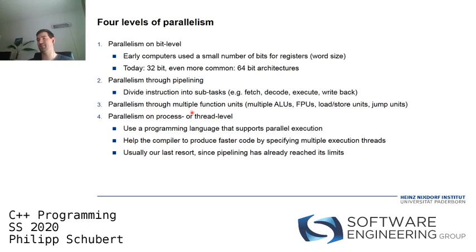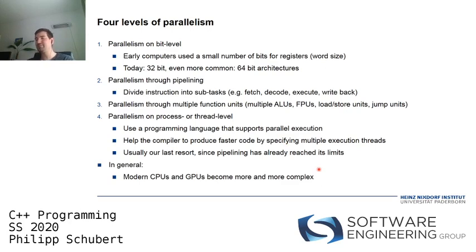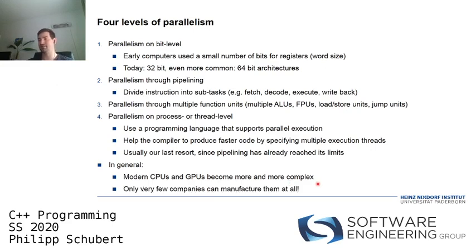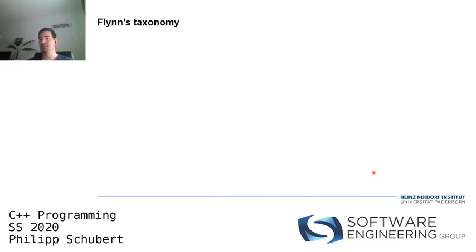By using threads, we help the compiler produce faster code by specifying multiple execution threads. Rather than having one main thread as in a sequential program, using threads tells the compiler that multiple things can run in parallel. That's basically the only thing left that we can do as application programmers, since pipelining has pretty much already reached its limits.